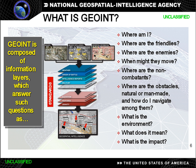GeoINT encompasses all aspects of imagery including capabilities formerly referred to as Advanced Geospatial Intelligence and Imagery-derived and Geospatial Information and Services, formerly referred to as Mapping, Charting, and Geodesy. It includes, but is not limited to, data ranging from the ultraviolet through the microwave portions of the electromagnetic spectrum.